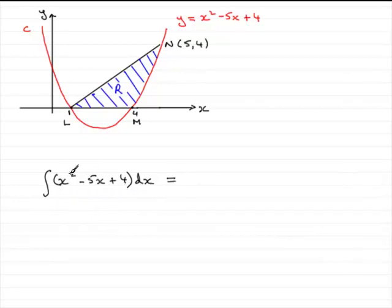what you do is add 1 to the power and divide by the new power. So if we add 1 to the power for x squared, we get x cubed, divide by the new power and you get over 3.